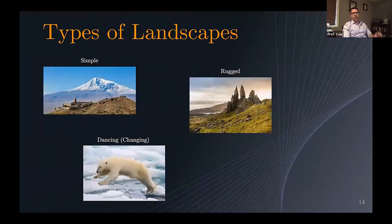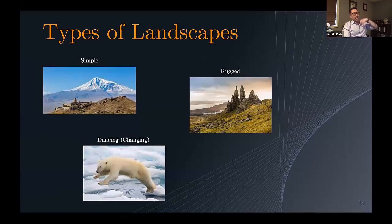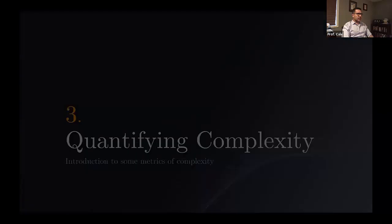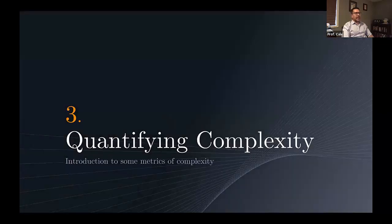We're quote-unquote wasting energy, even though we have a very good solution right now. We sort of waste a little bit of energy by creating mutations in the hope that maybe they will be advantageous if this landscape changes. So how would we quantify complexity?